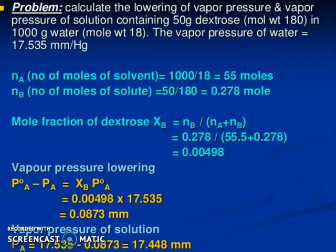nA, number of moles of solvent: 1000 divided by 18 equals 55 moles. nB, number of moles of solute equals 50 by 180, 0.278 mole. Mole fraction of dextrose, XB equals nB divided by nA plus nB: 0.278 divided by 55.5 plus 0.278 equals 0.00498. So Vapor Pressure lowering equals P°A minus PA equals XB P°A.